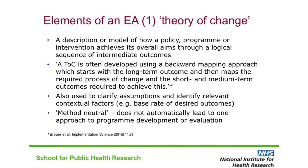I'd like to illustrate the key elements of the EA process by discussing one of the EAs that I undertook with colleagues on behalf of the Scottish Government. We were asked to conduct an EA of the Family Nurse Partnership — an intervention for first-time teenage mothers. It replaces the standard care during pregnancy and the early years provided by health visitors with a more intense program of visits provided by specially trained nurses. The first stage of the EA process was to develop the theory of change — a model or description of how a policy or program achieves its overall aims through a logical sequence of intermediate outcomes. It's often developed using a backward mapping approach, starting with a long-term outcome and moving back through the required process of change, taking into account the short- and medium-term outcomes required to achieve the ultimate goals.